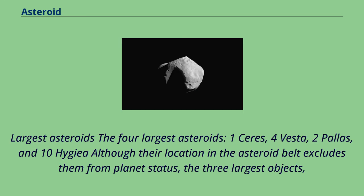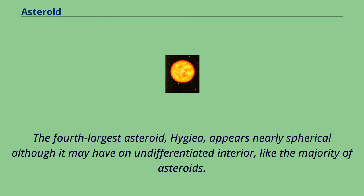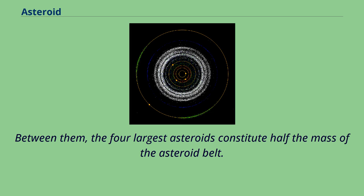The four largest asteroids — 1 Ceres, 4 Vesta, 2 Pallas, and 10 Hygieia — although their location in the asteroid belt excludes them from planet status, the three largest objects, Ceres, Vesta, and Pallas, are intact proto-planets that share many characteristics common to planets, and are atypical compared to the majority of irregularly shaped asteroids. The fourth largest, Hygieia, appears nearly spherical although it may have an undifferentiated interior. Between them, the four largest asteroids constitute half the mass of the asteroid belt.